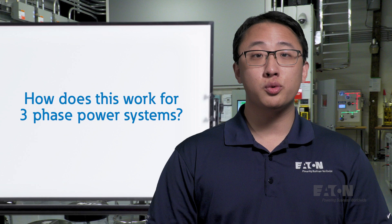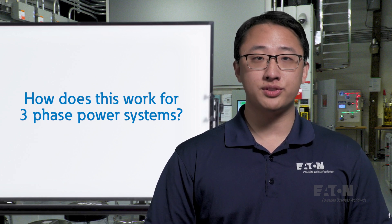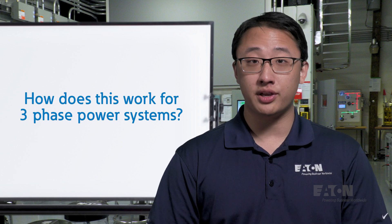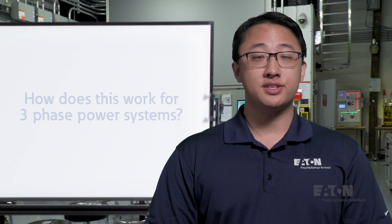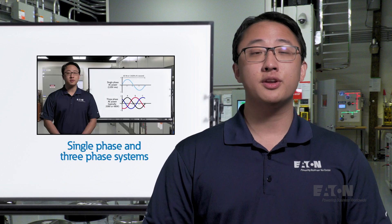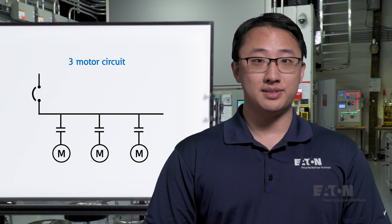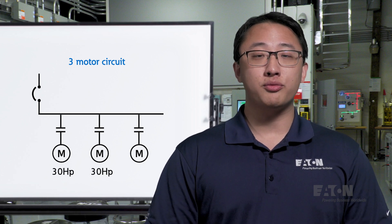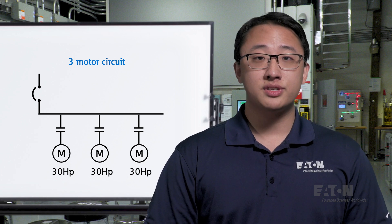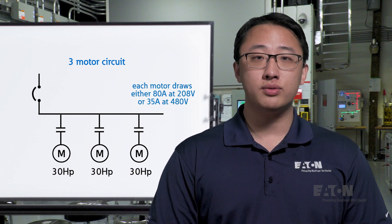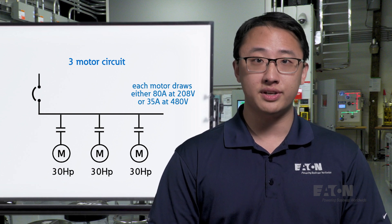The previous examples we used were with single-phase power in a residential setting, but most larger-scale power systems, like in industrial and commercial applications, will require three-phase power. Now let's bring it all together and design a system. The goal is to power three pre-chosen 30-horsepower motors. The nameplate data for the motors says they draw 80 amps at 208 volts, or 35 amps at 480 volts, to feed chillers in a commercial facility.